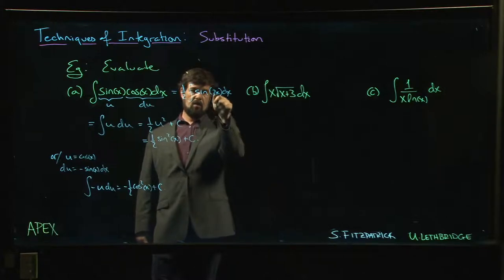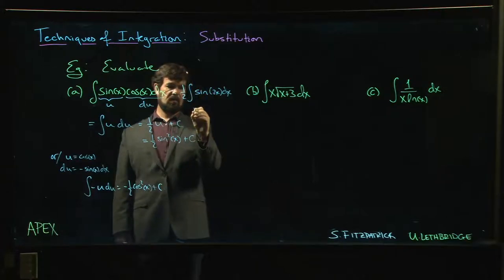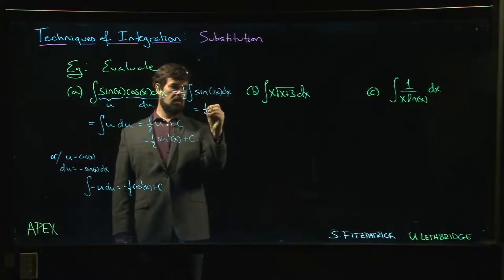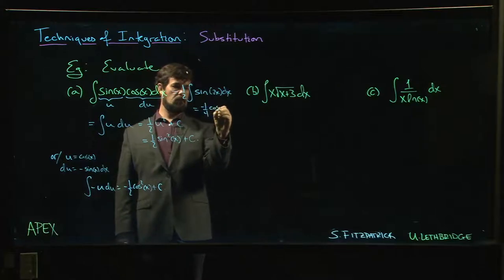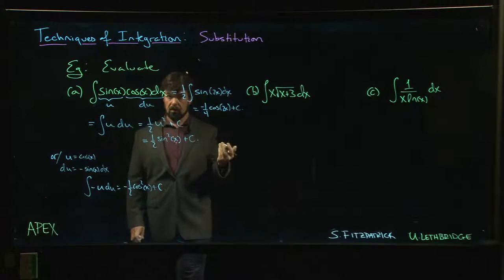u would be equal to 2x, du would be 2 dx, so dx is half du. I could have got minus one quarter cos 2x, and that would have also been a valid answer.